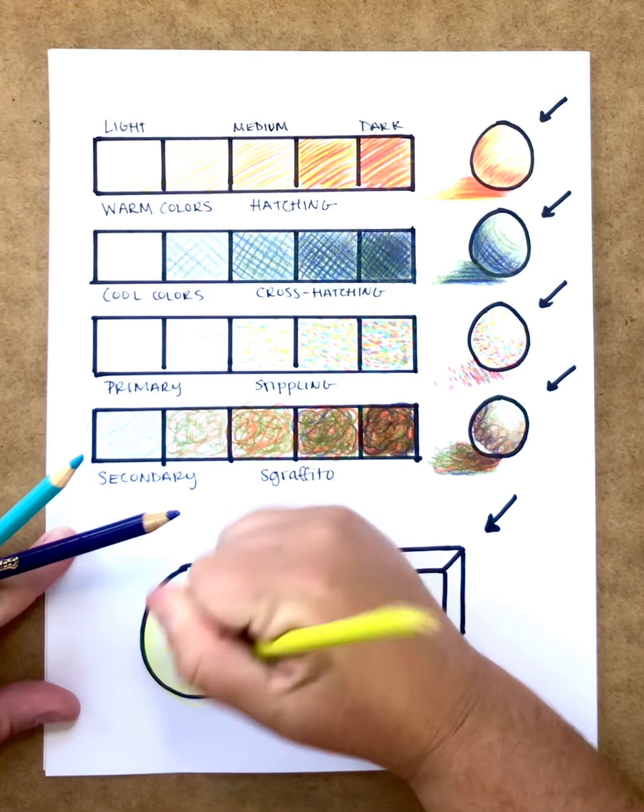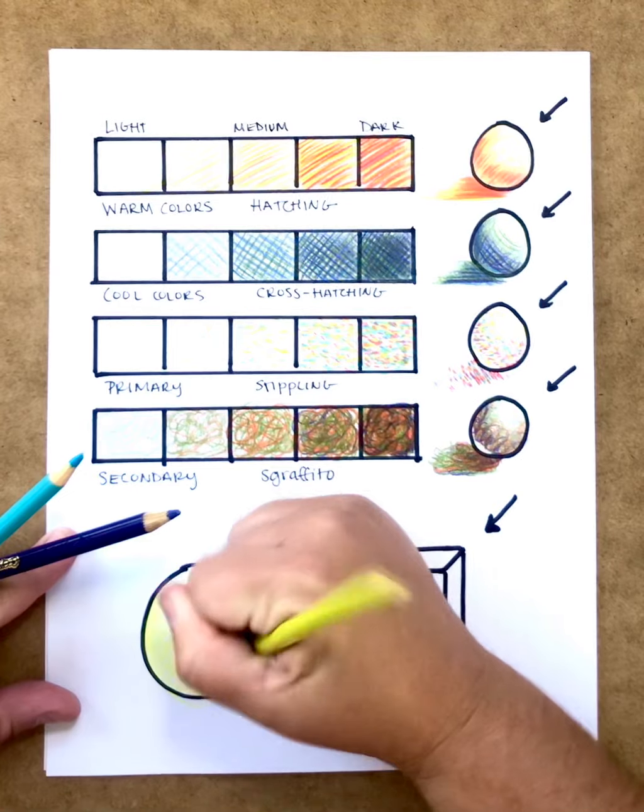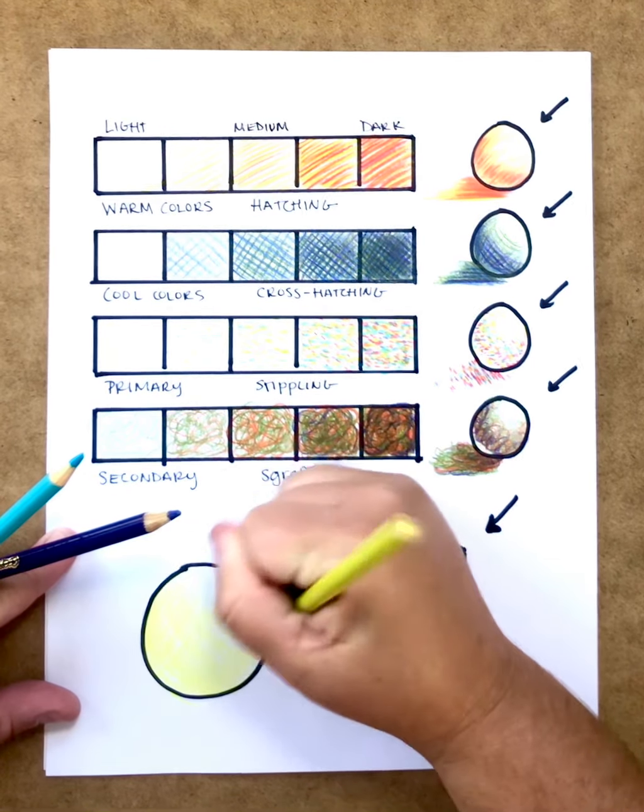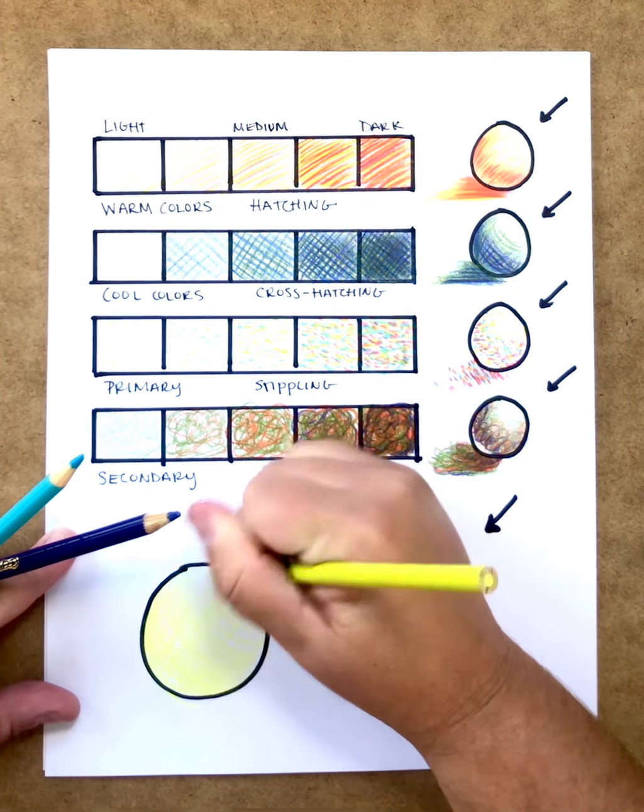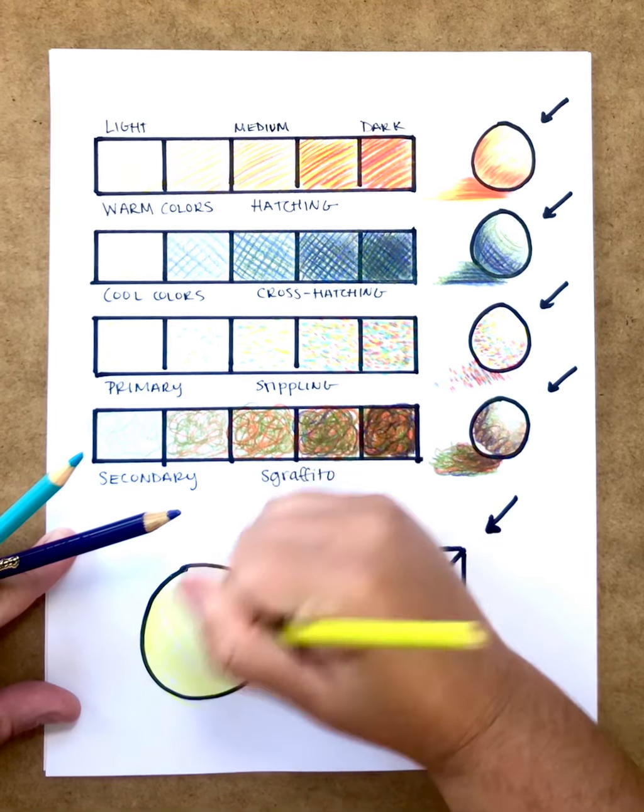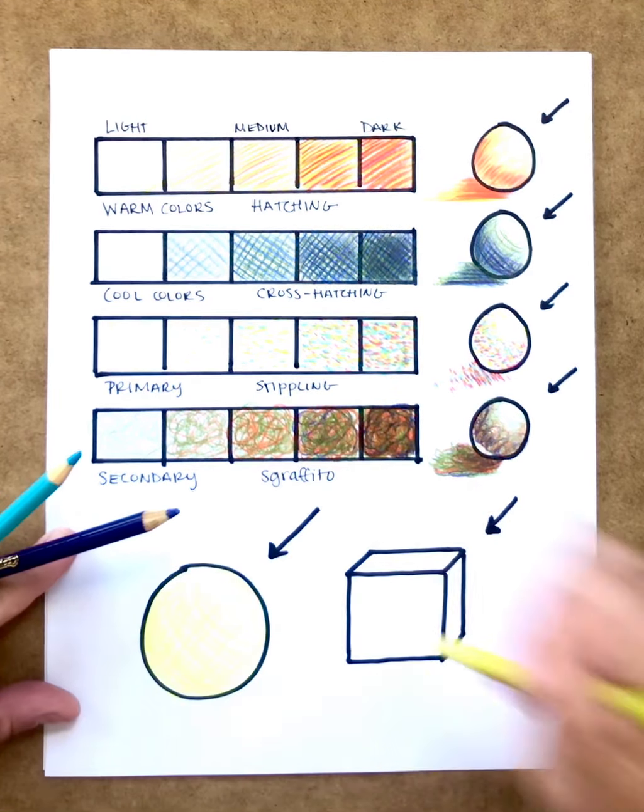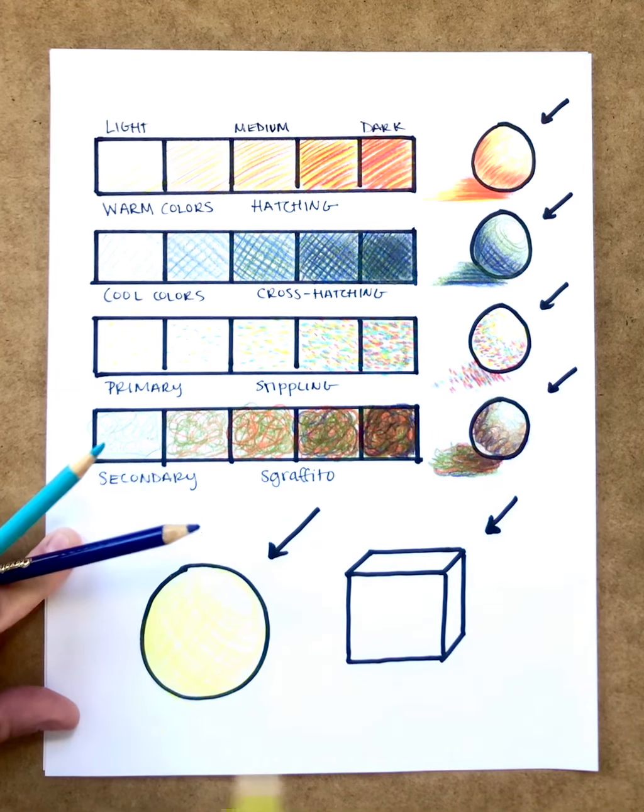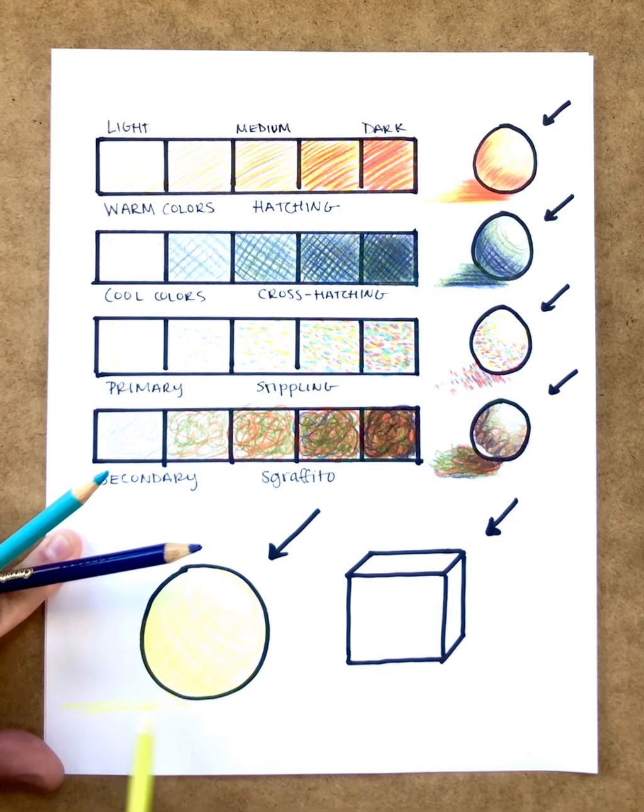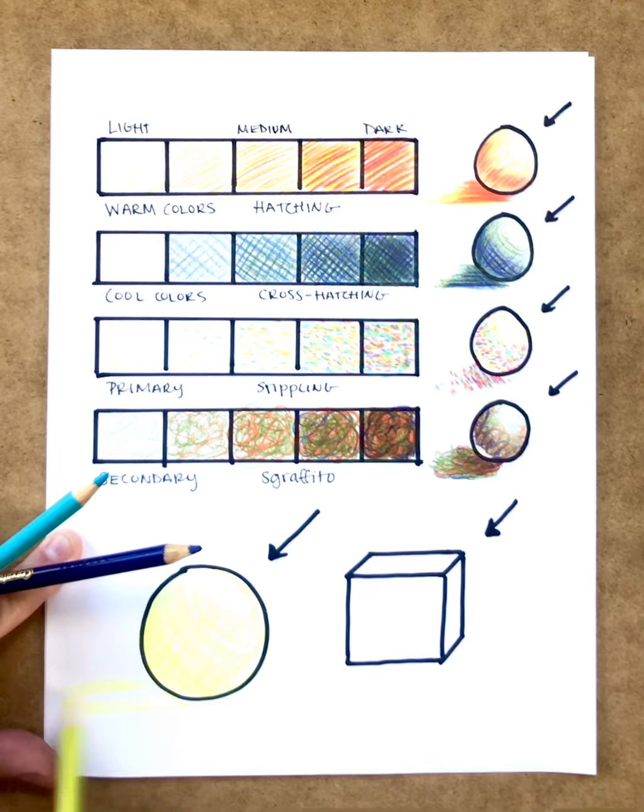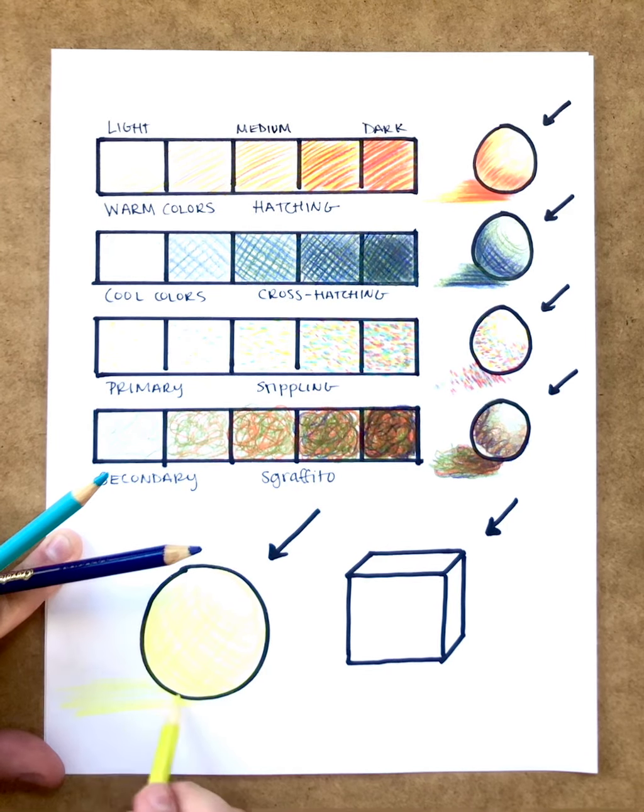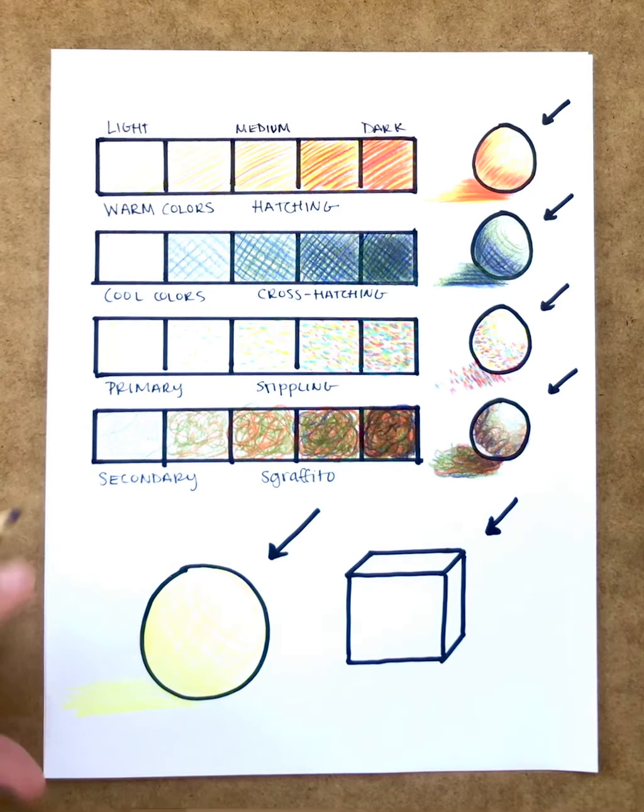I'm doing the same thing this direction also following the curve of the sphere and when I get up here I can even go around that to really showcase that highlight. So now that I have my light colors I can make my shadow coming out. Now I'm doing cross-hatching so I can add lines going both directions.